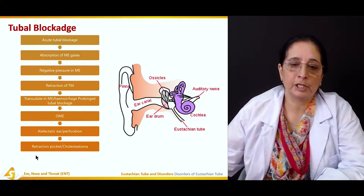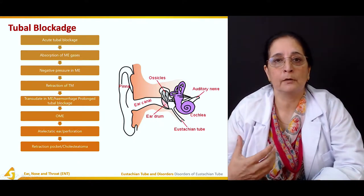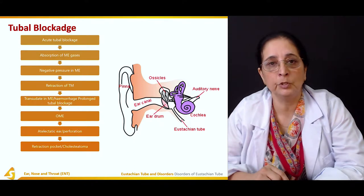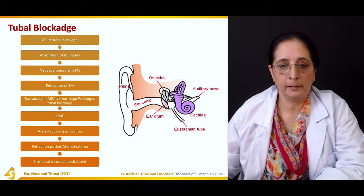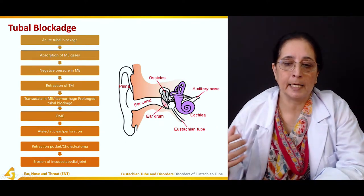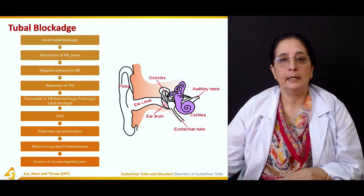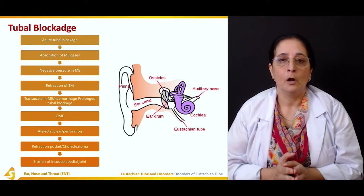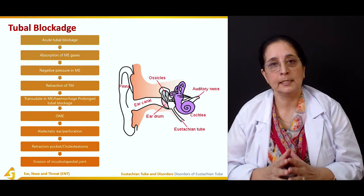Then there is retraction pocket or cholesteatoma. Cholesteatoma is the presence of abnormal cells. All these changes can occur with the blockage of the Eustachian tube, and then there is erosion of the incus and stapedial joint — the junction between the incus and stapedius. Incus and stapedius are the ossicles present in the middle ear.